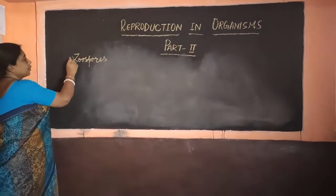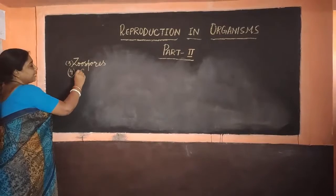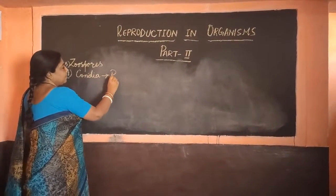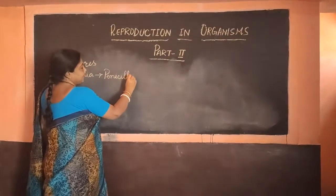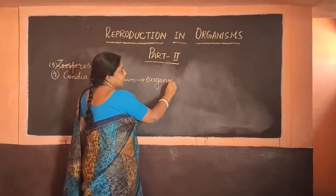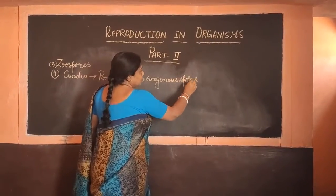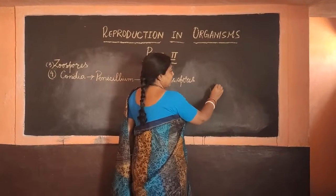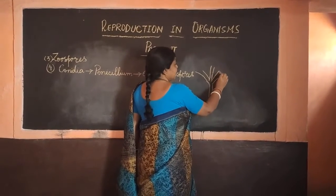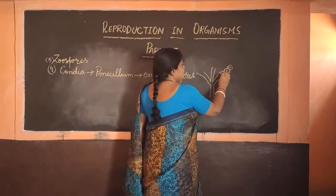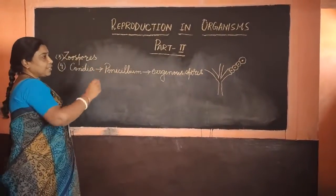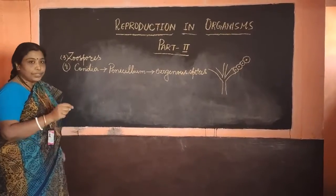The next one we are going to deal with is conidia. The best example where we can see this is Penicillium, which is a fungus. These are exogenous spores — conidia spores come out of the hyphae in chains. When they fall on a suitable substrate, each of them has the capability of giving rise to new individuals.